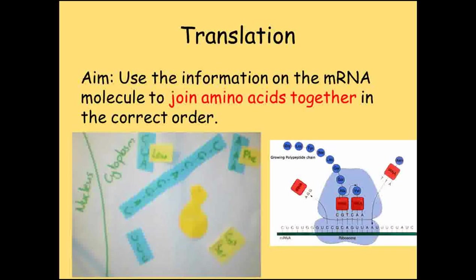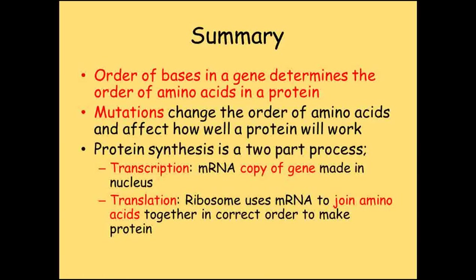We have seen how the order of bases in DNA determines the order of amino acids in a protein. If there is a mutation, there will be an incorrect order of bases along the mRNA made during transcription, which will result in the wrong order of amino acids being joined together in translation. This will mean the protein will form a different shape when complete, which will usually result in it being less effective. The first stage of protein synthesis, called transcription, involves the DNA unzipping and an mRNA copy being made.